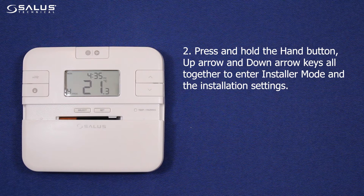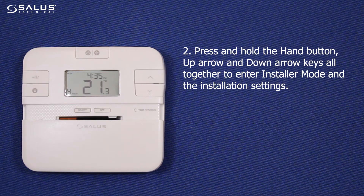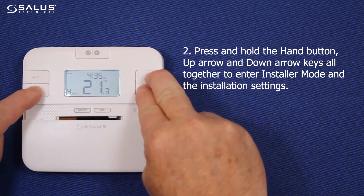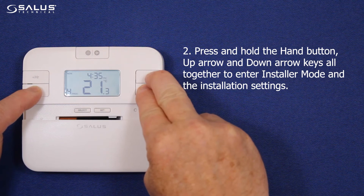Step 2. Press and hold the hand button, up arrow, and down arrow keys all together to enter Installer Mode and the installation settings.